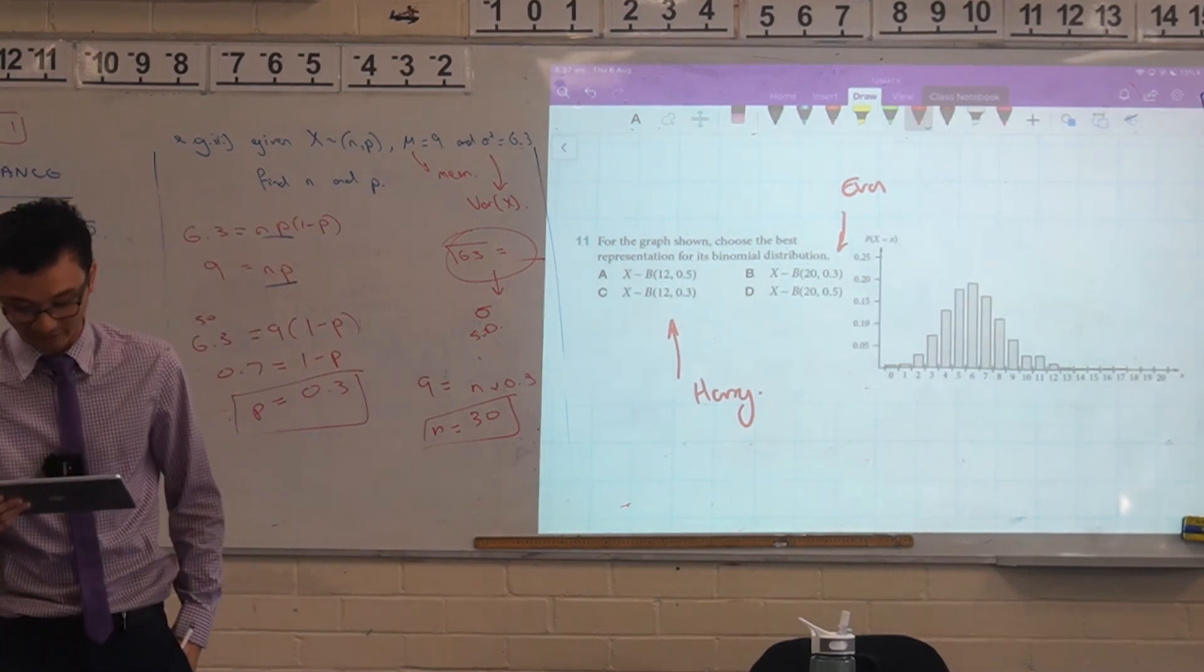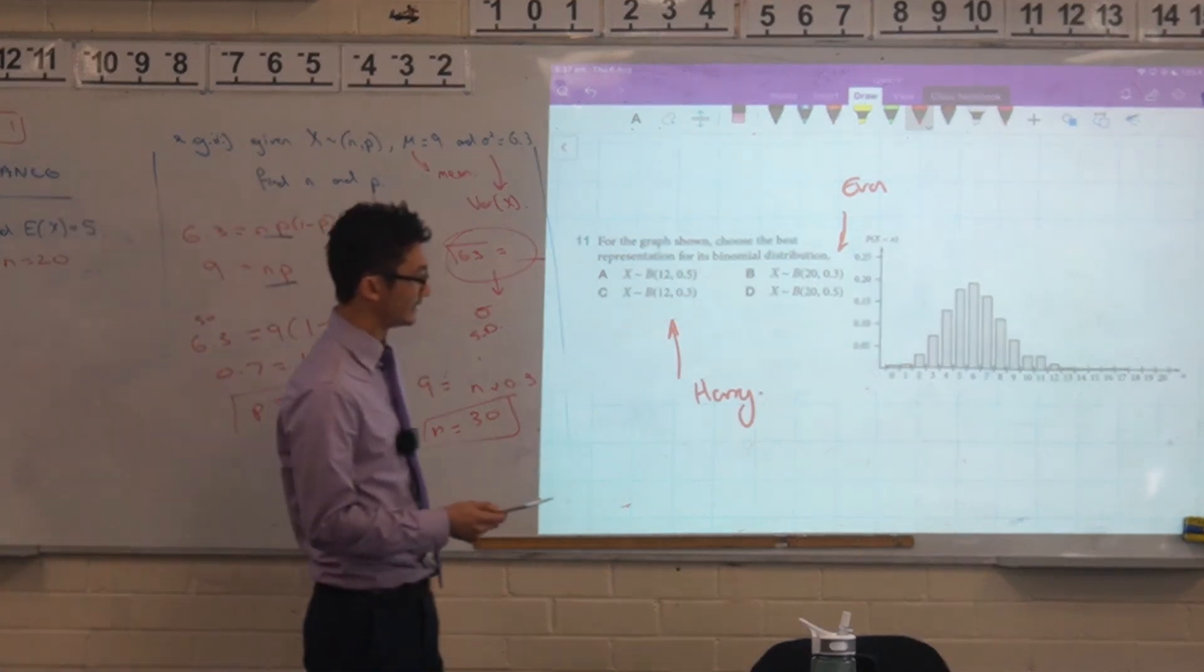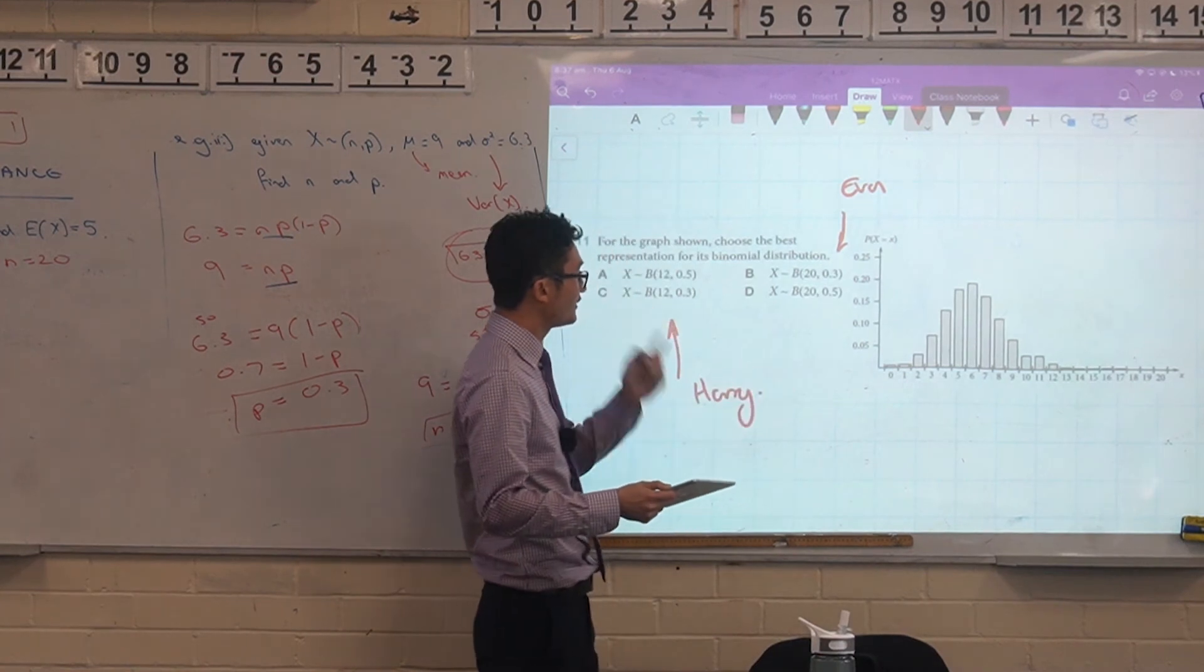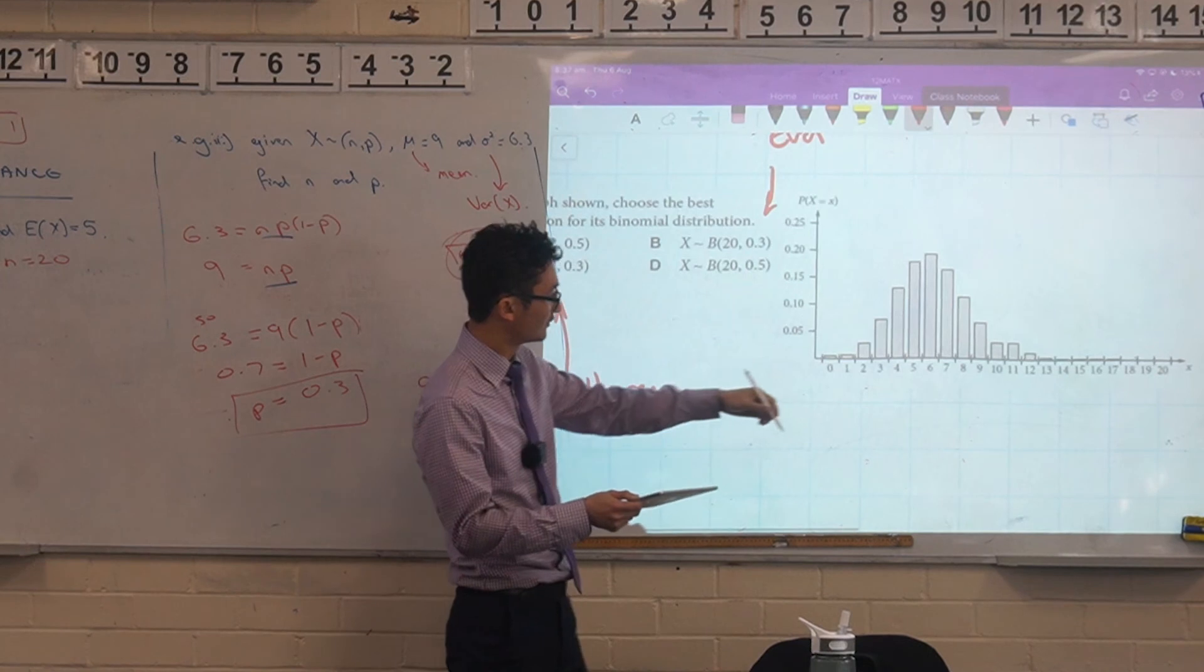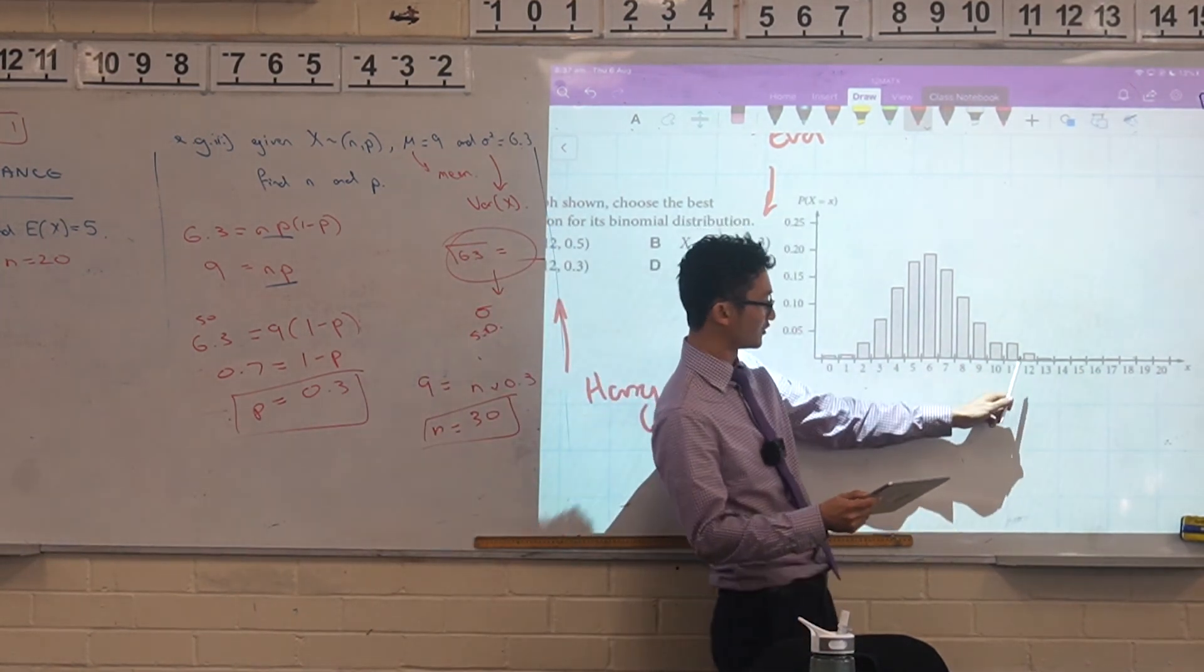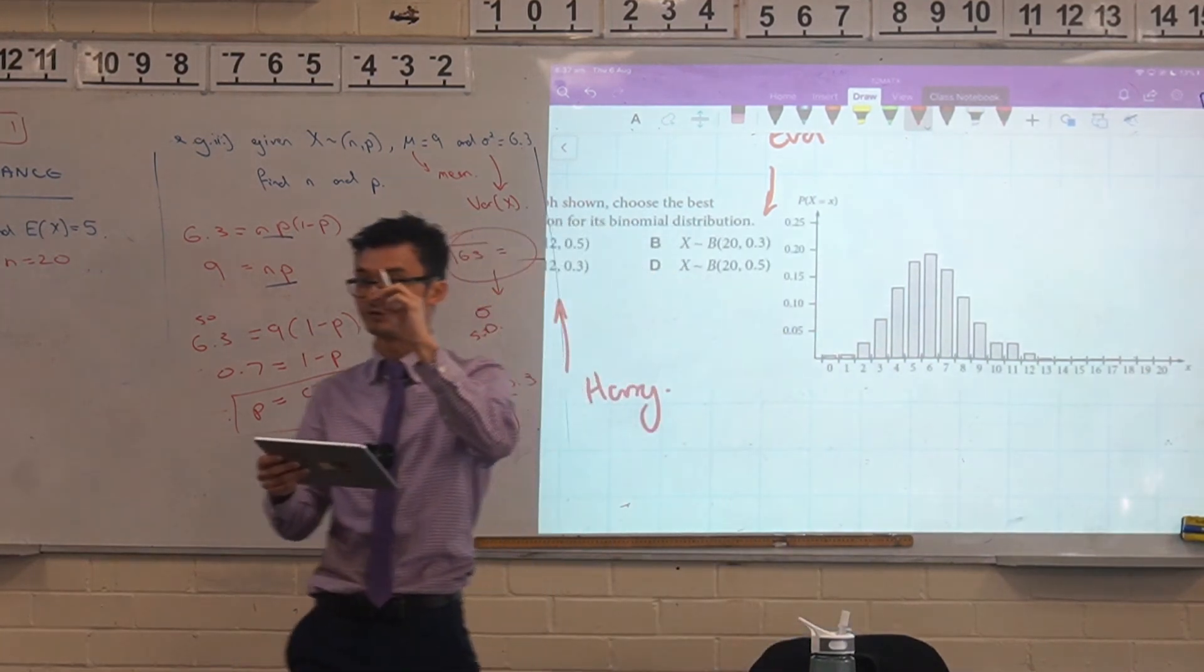Why is it not 0.5? Because it's not the middle. Right, so the idea is, although this kind of looks symmetrical in some respects, think about how many trials are actually being run. You can actually see, if you look a bit closely, the trials are actually being run up to 20. It definitely goes past 12, right? Because it's definitely still up there. It's just that the probabilities for 20 are very, very small.